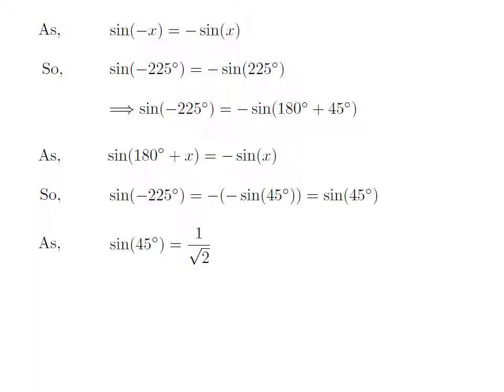We know the value of sine of 45 degrees is equal to 1 upon square root of 2. So, we get the value of sine of minus 225 degrees is equal to 1 upon square root of 2.